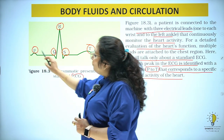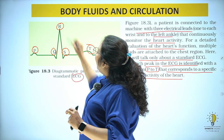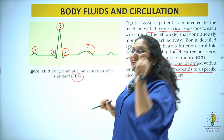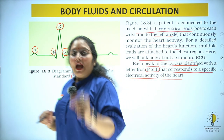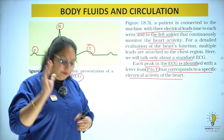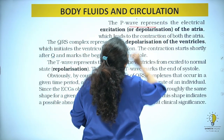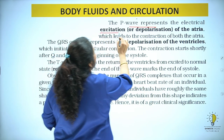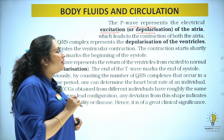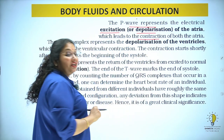In the ECG, P is a tiny wave, R is the tall long wave, and T is a small wave. The P wave represents the electrical excitation, or depolarization, of the atria, which leads to contraction of both the atria.